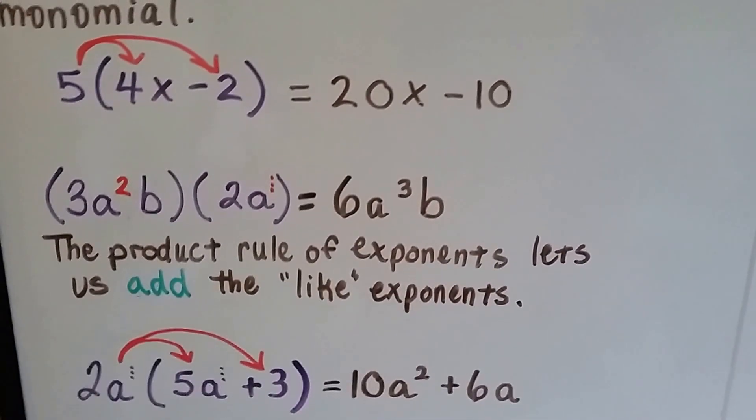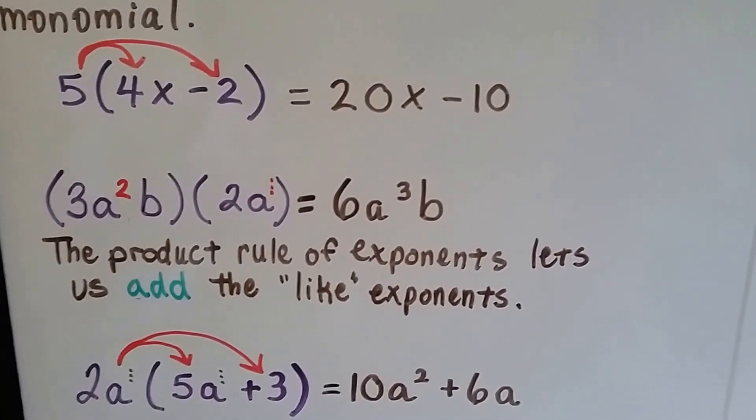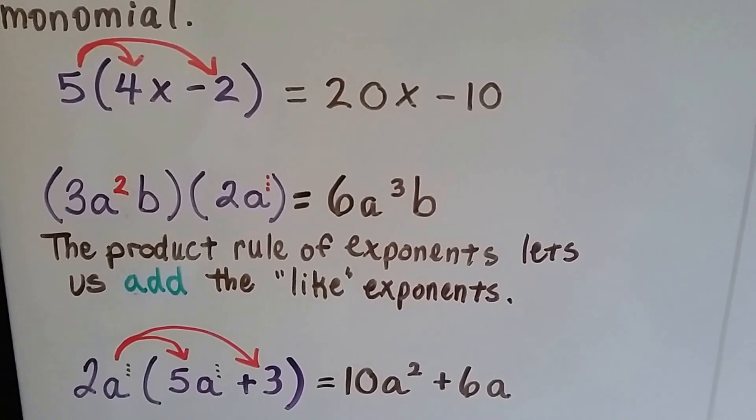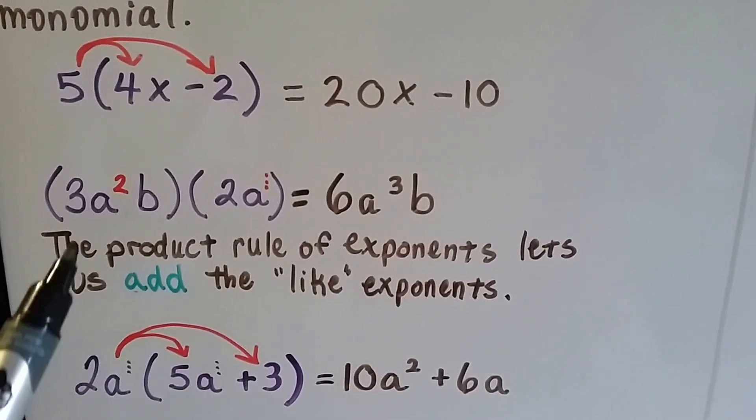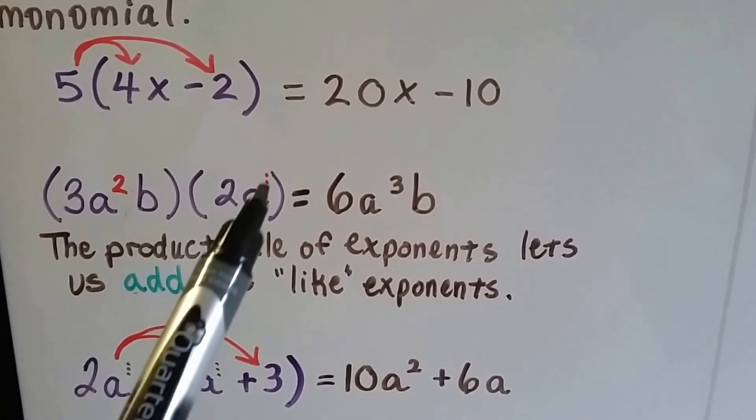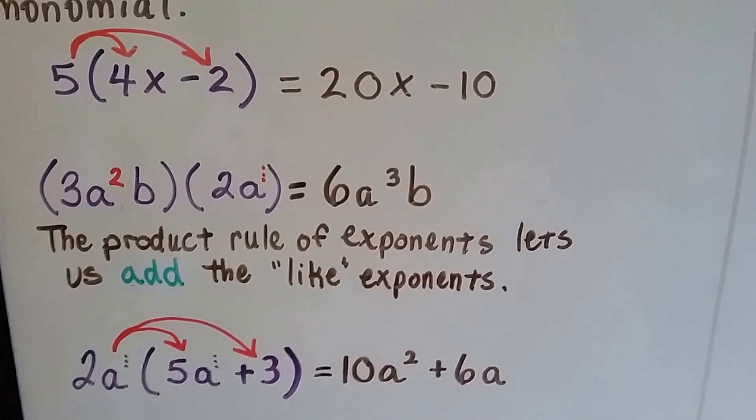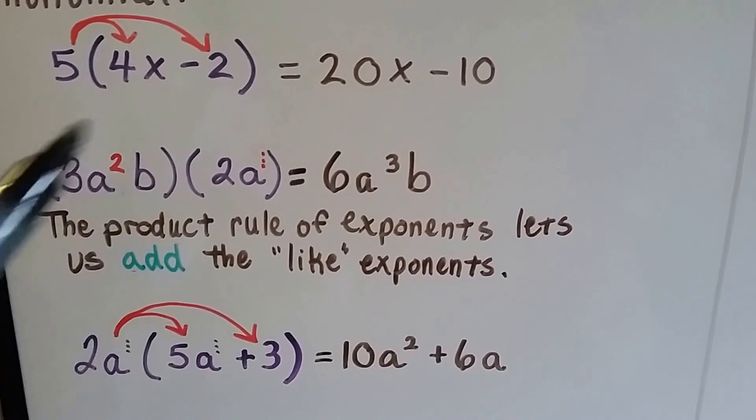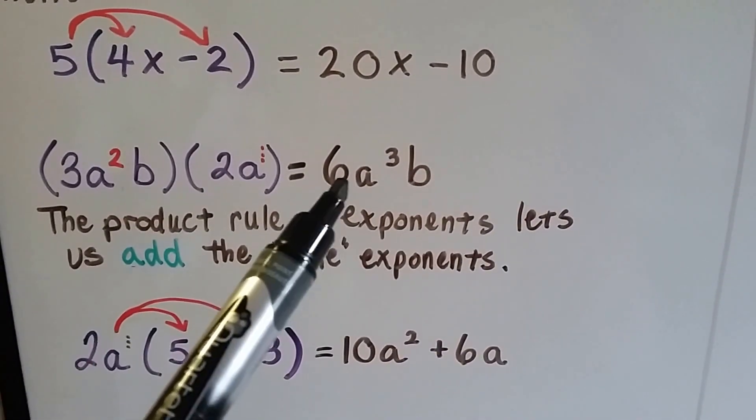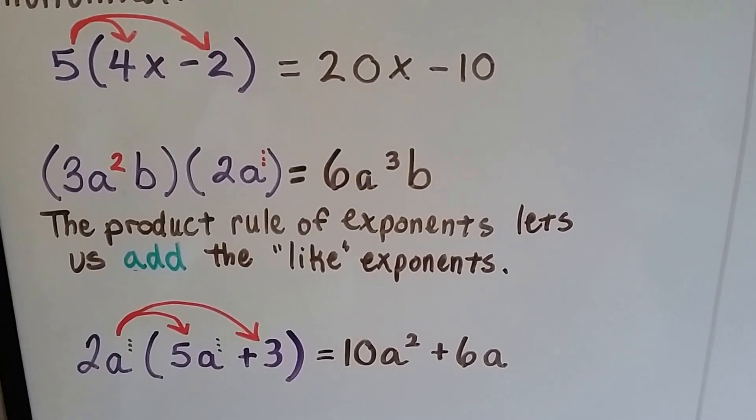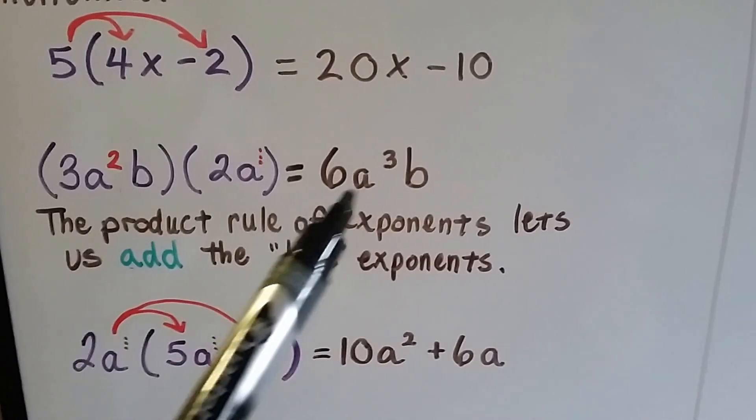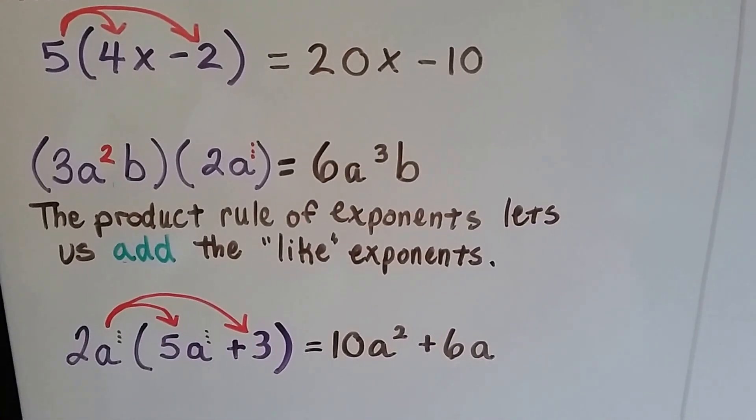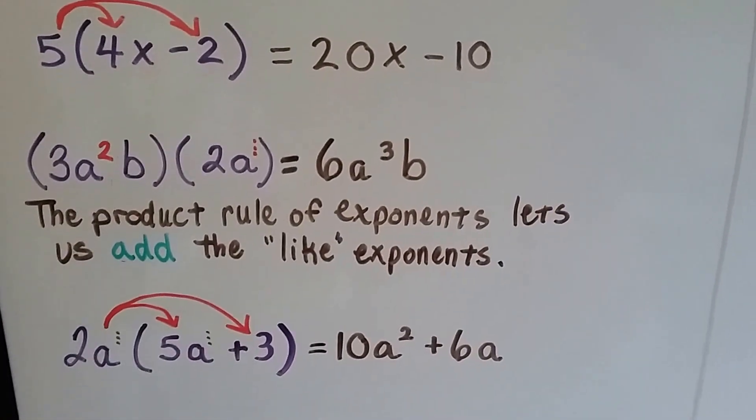When they're in parentheses, just remember that the product rule of exponents lets us add the like exponents. So because there's an a here and an a here, and there's our friend the invisible one on that a, when we multiply 3 times 2, that's going to get us a 6. And we add the exponents, 2 plus 1 puts a 3 exponent above the a, and the b just goes along. So we have 6a to the third power b.